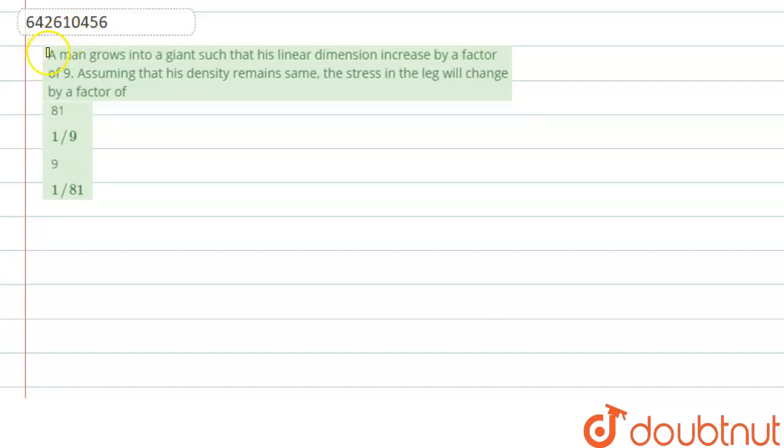Hello everyone. Let's start the question. Question says that a man grows into a giant such that his linear dimension increases by a factor of 9, assuming that his density remains same, the stress in the leg will change by a factor of.